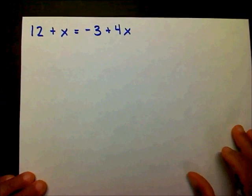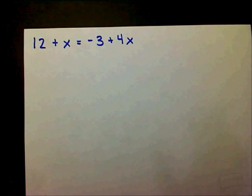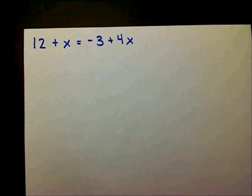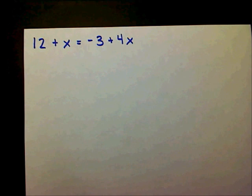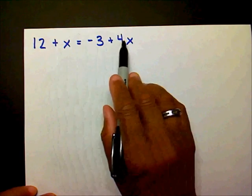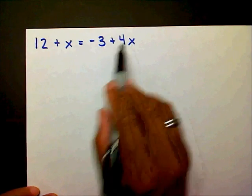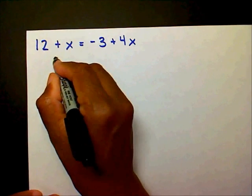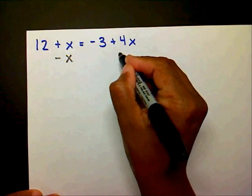Let's look at the next one. Again, I'm solving a multi-step equation with variables on both sides. I want to find my smallest x term. I have a plus x here — a 1x — and a plus 4x here. So I'm going to move this plus x first by subtracting x on both sides.